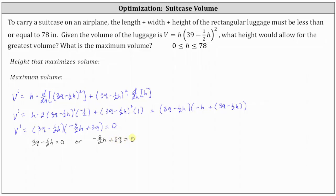Solving the first equation for h, we subtract 39 from both sides, giving us negative one half h equals negative 39. Multiplying both sides by negative two gives h equals 78. However, if the height is 78, then the width and length would have to be zero, giving a volume of zero. So this won't maximize the volume, but we'll also check this graphically.